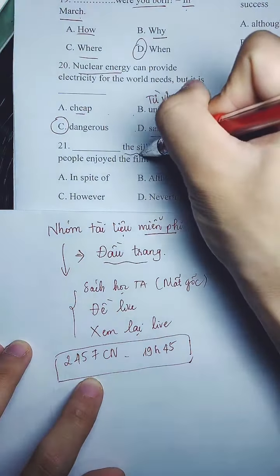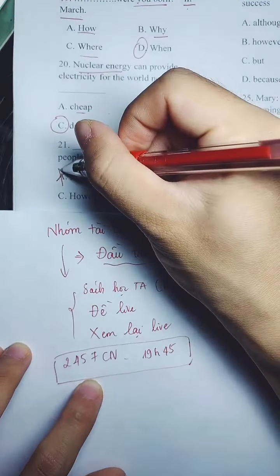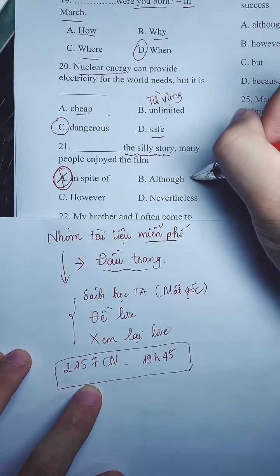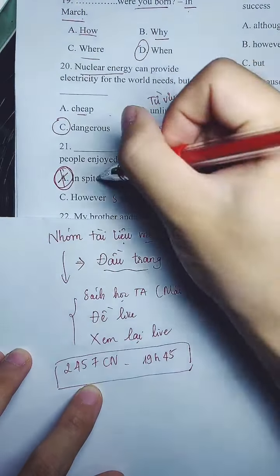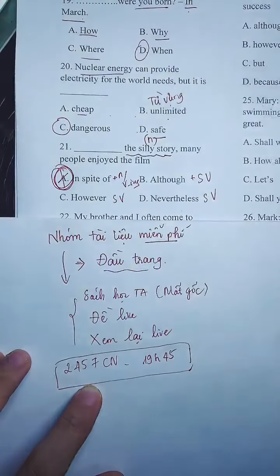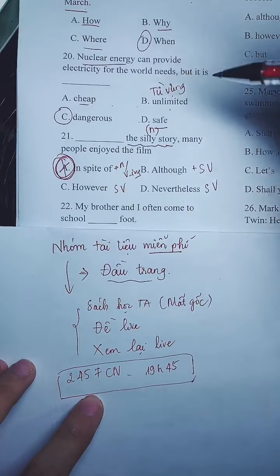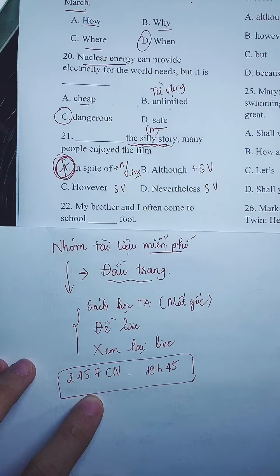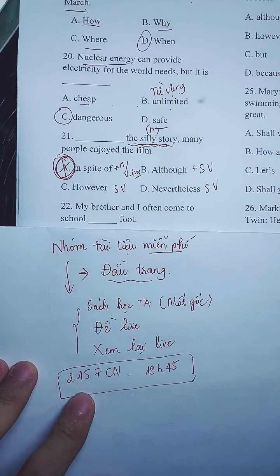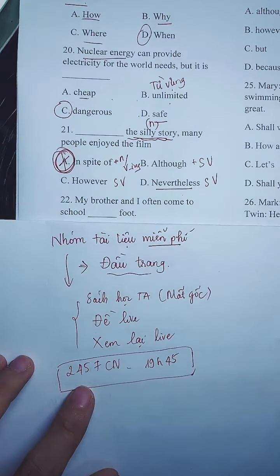Câu 21 — liên từ. Hướng dẫn loại trừ: chọn đáp án A. Loại các đáp án còn lại vì tất cả đều cộng với S + verb. Cái này là 'now'. Thấy chưa? 'The story's plot is very silly, but many people still like the movie.' Chỗ này không có động từ đâu. Đáp án D cũng có nghĩa là 'tuy nhiên' — bằng với 'however' — nhưng cộng với S + verb, không phù hợp cấu trúc ở đây. Chọn A.